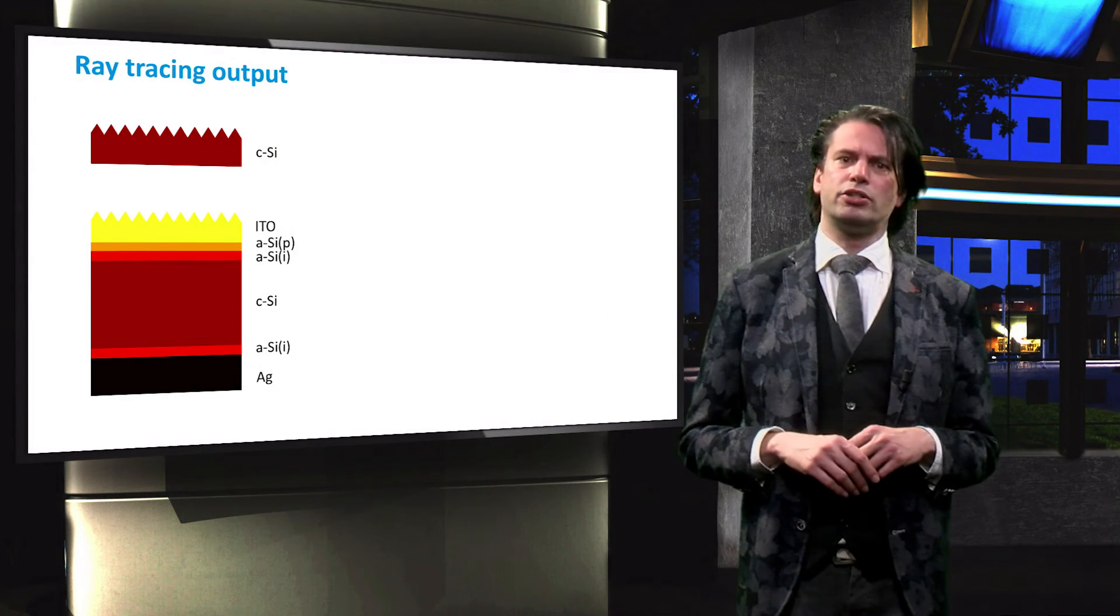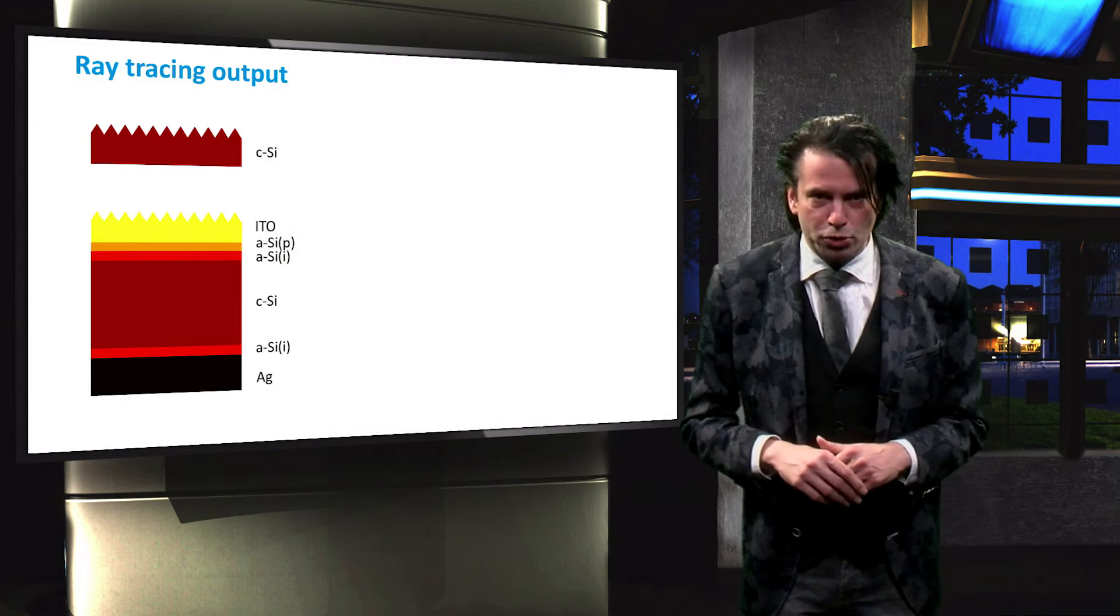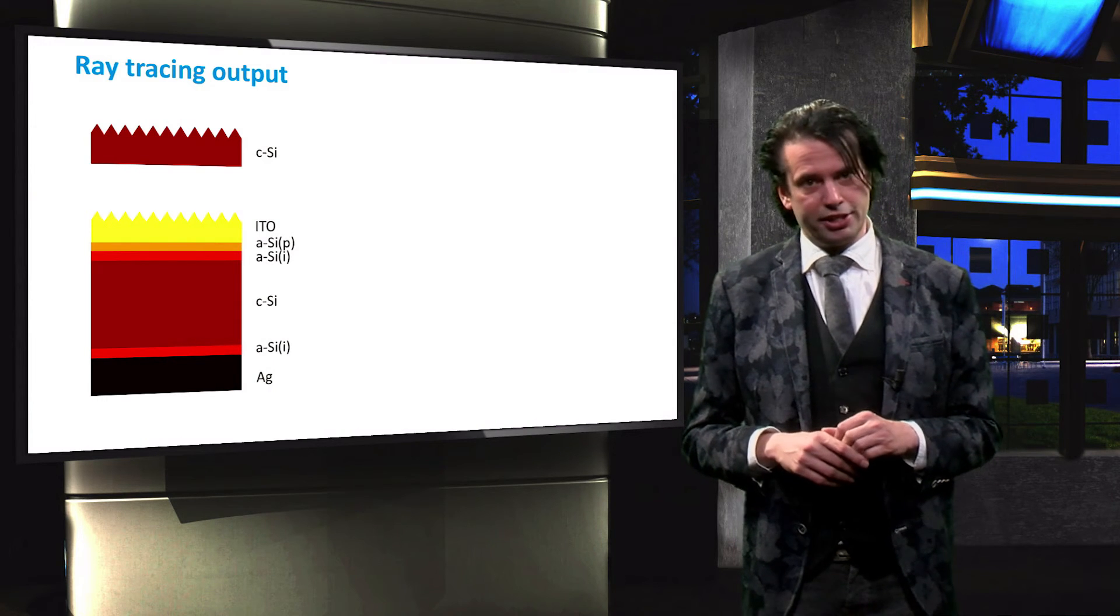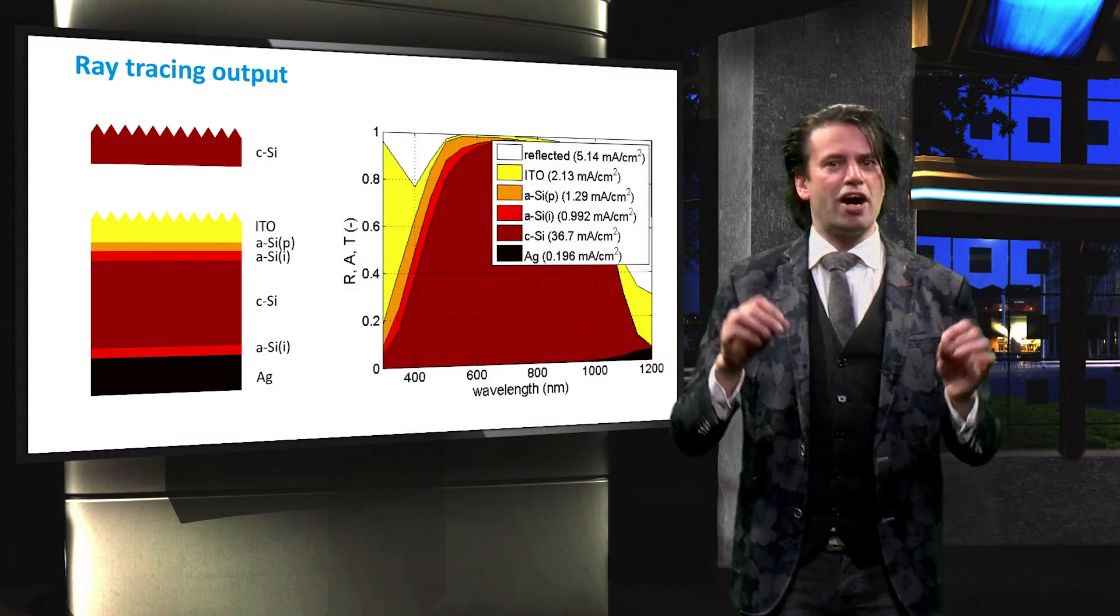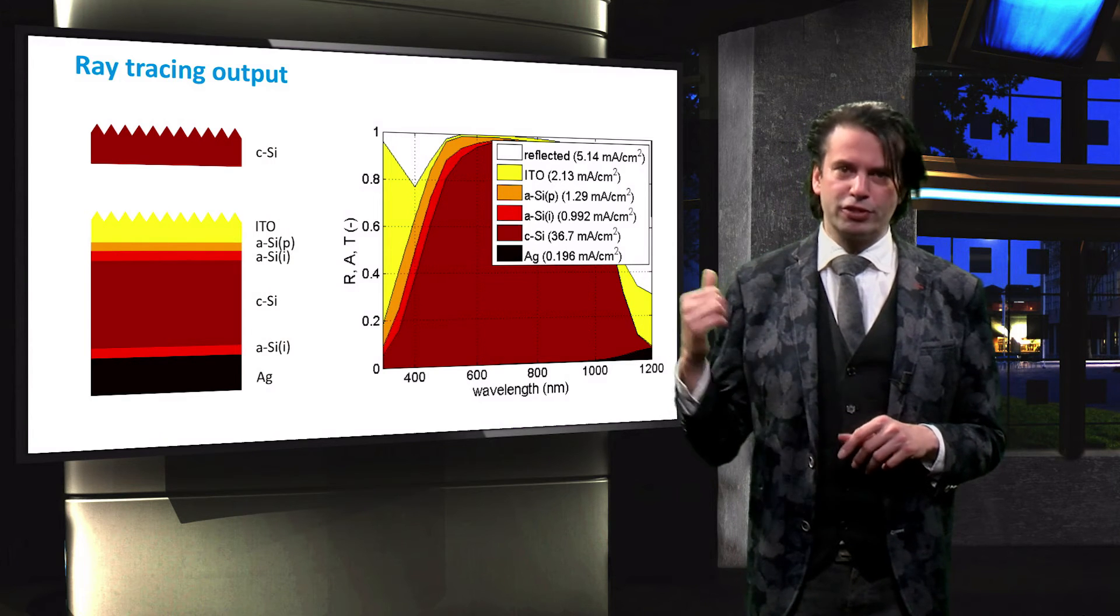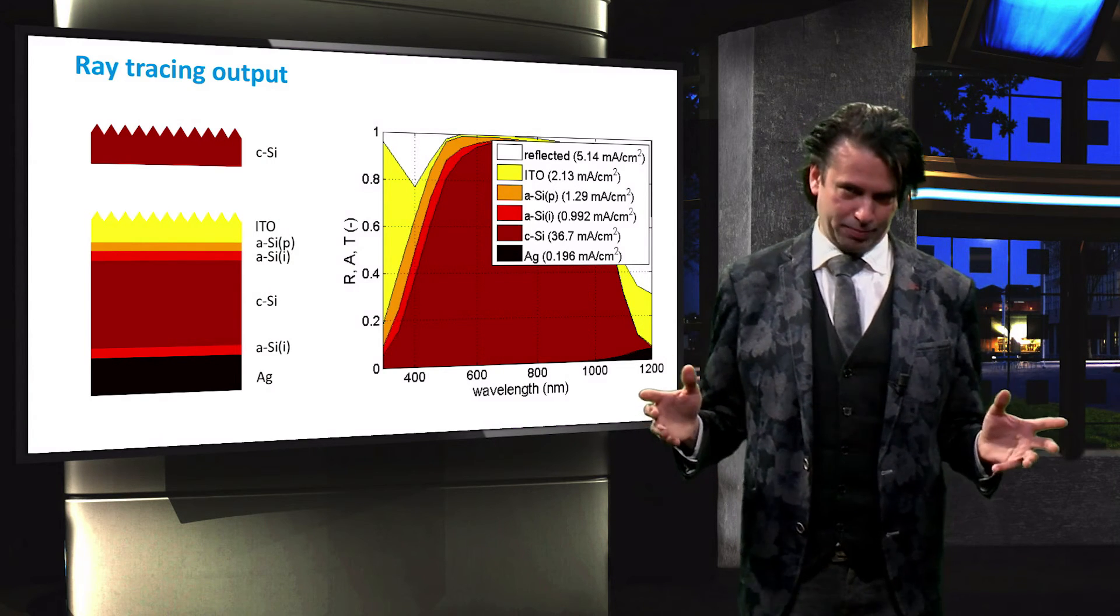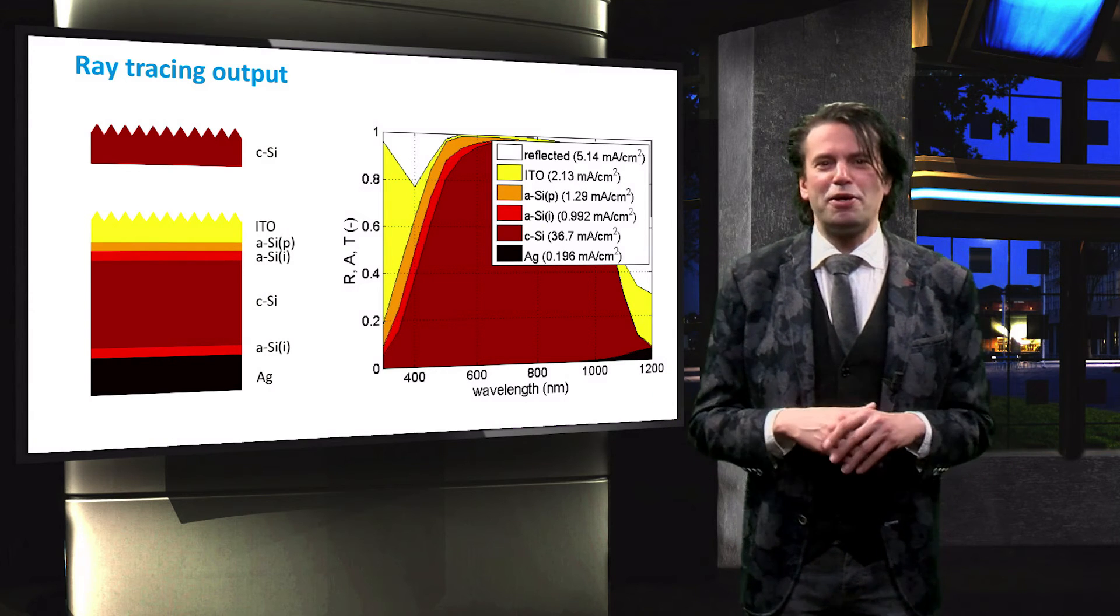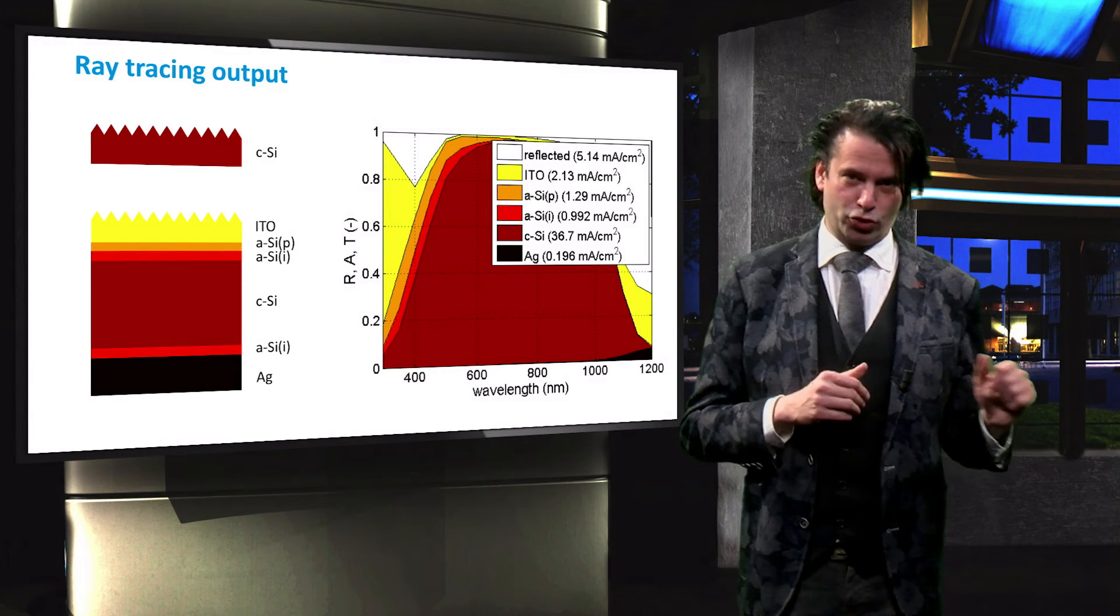The ray tracing simulation will then output the spectral absorption and reflection in each layer. Such a graph is shown here. The different colors indicate absorption in the different layers. The white area represents the reflection of the front surface.